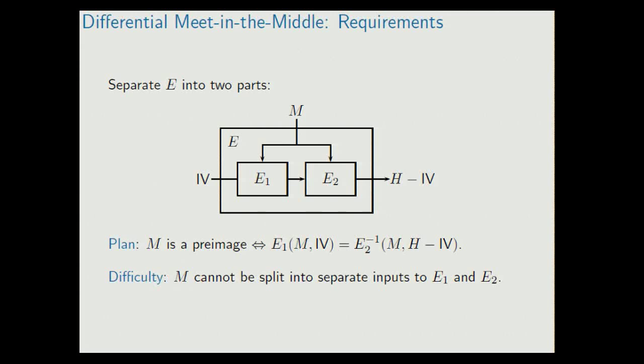The difficulty with this is that we cannot separate the message into two separate parts, an input to E1 and an input to E2. If you could do this, then the classical meet-in-the-middle attack would apply that I think was first observed by Diffie and Hellman in '77, and which is the reason that we don't use double-DES but triple-DES. So this does not work here, because we cannot separate this message input.